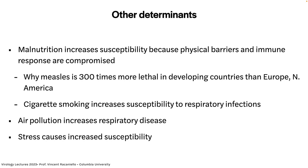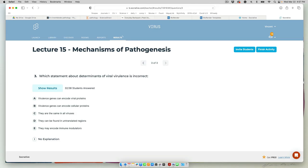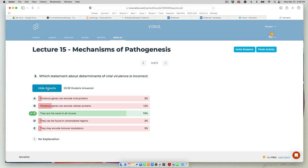The question is: which statement about determinants of viral virulence is incorrect? The wrong answer is 'They are the same in all viruses' — they're not, every virus can be slightly different. The correct statements are: virulence genes can encode viral proteins; they can encode cellular proteins; they can be found in untranslated regions; and they may encode immune modulators — that last one is a big one.